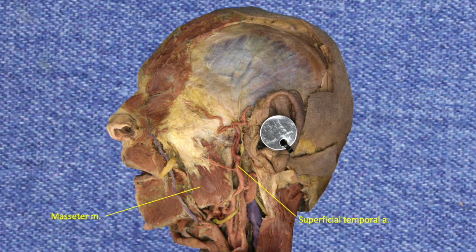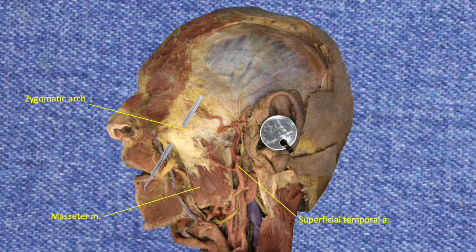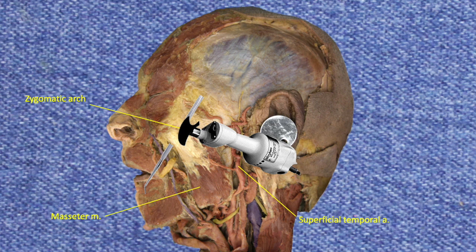We're now ready to enter the infratemporal fossa. For orientation purposes, structures we saw previously are now labeled, including the masseter muscle and superficial temporal artery. We identify the zygomatic arch to which the masseter muscle is attached. Using a probe, we insert deep to the zygomatic arch as far anteriorly as the arch allows. Then, using a bone saw, we cut through the zygomatic arch down to the probe. The probe is protecting the deeper structures from being damaged by the saw.